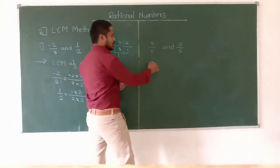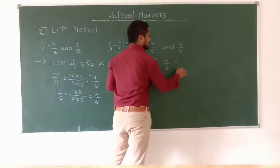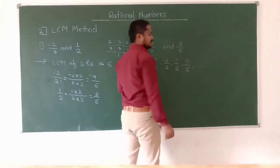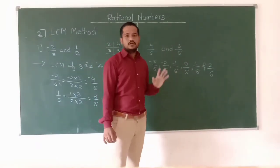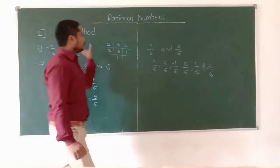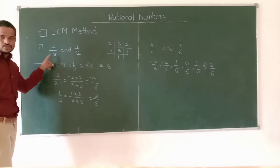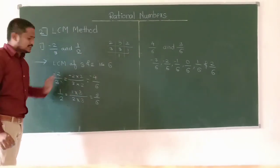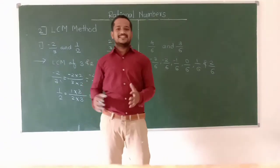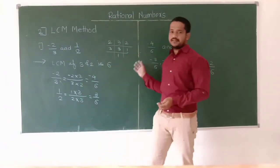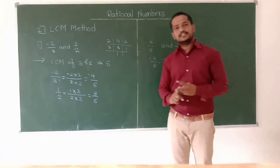Between minus 4/6 and 3/6 we can write: minus 3/6, minus 2/6, minus 1/6, 0/6, 1/6, and 2/6. You can write any three numbers from all these options. So in short, the LCM method involves first finding the LCM of the denominators, then converting each rational number to that LCM denominator, and then simply writing rational numbers between the two converted values. In this session we covered how to find rational numbers between two given rational numbers using both the average method and the LCM method. Thank you and keep watching.